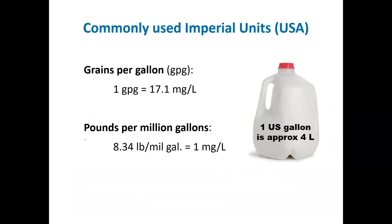If you're interested in the imperial system — in the US they use gallons — in this class we will be using the metric system at almost all times. But it's worth knowing you may see some unusual units. GPG, for example, is a common unit used in the States — grains per gallon — and it's on the same order of magnitude as parts per million. It does pop up occasionally, just not in this class.